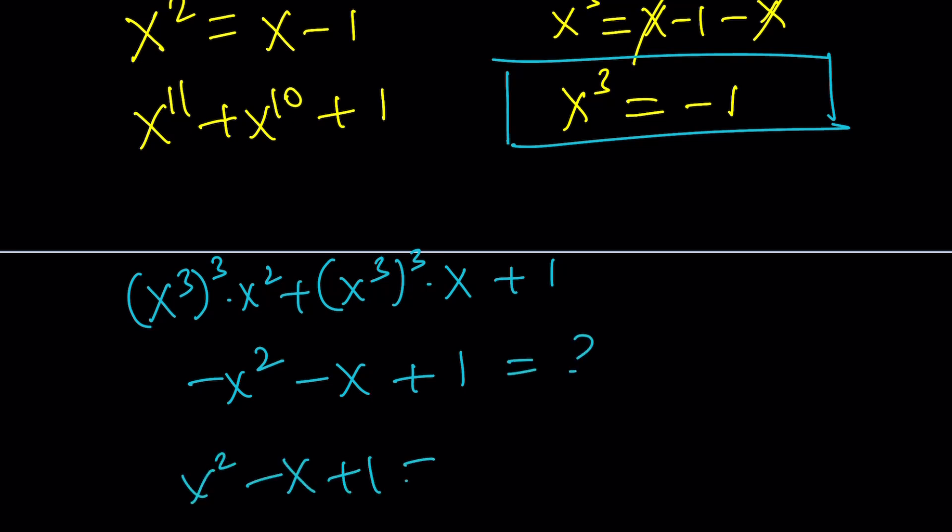Well, we do know that x squared minus x plus 1 is equal to 0. So, this is the same as that, just the opposite, right? So, this is going to be negative 1 times x squared minus x plus 1. And since this is 0, the answer will be 0 again. All right, makes sense? So, the whole thing is equal to 0.